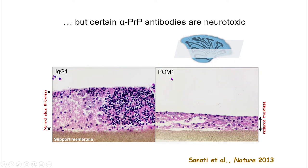An example is an antibody called POM1. When POM1 was delivered onto organotypic chronic slices of cerebellum, after three days of treatment the cerebellar slice essentially collapses and all neurons are gone — the Purkinje cells and the cerebellar granule neurons all disappear. This is a super toxic antibody.